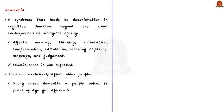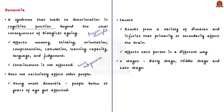Dementia is a syndrome that leads to deterioration in cognitive functions — that is, the ability to process thought — affecting memory, thinking, orientation, comprehension, calculation, learning capacity, language, and judgment. Importantly, the consciousness of a person is not affected; the person remains aware and responsive to surroundings, but other thinking abilities deteriorate. Dementia is not a specific disease but a general term for impaired ability to remember, think, or make decisions. Such deterioration in cognitive function is beyond the usual consequences of biological aging.